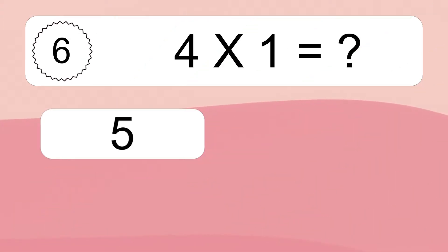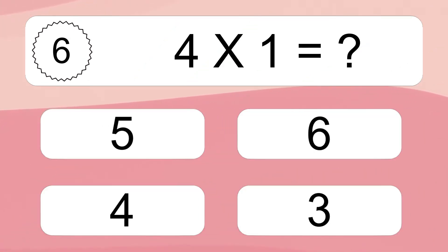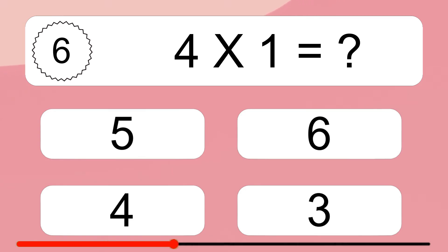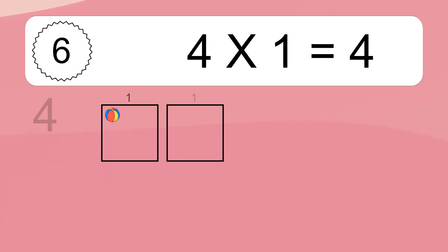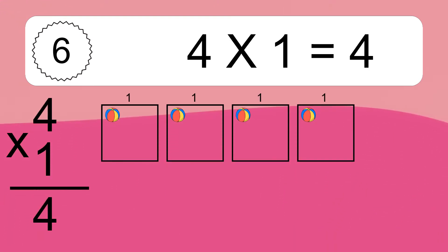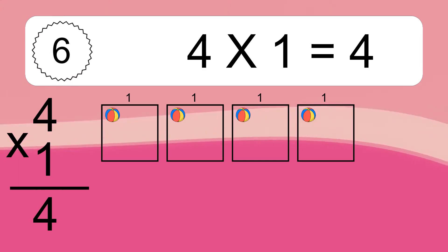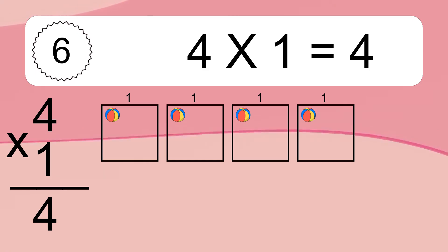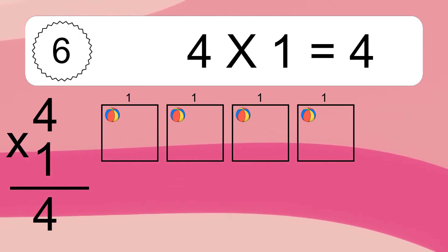4 times 1 equals what? 4 times 1 equals 4. We have 4 boxes, and each box has 1 colorful ball inside. If you count all the balls in all the boxes together, you will have 4 times 1 balls. This equals 4 balls.